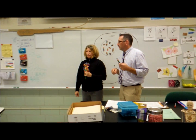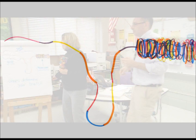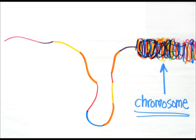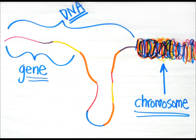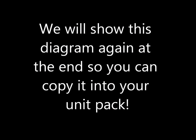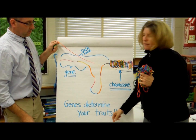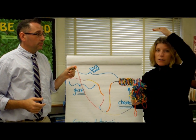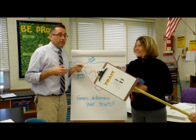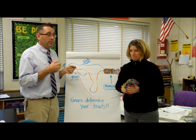Let's go over to our diagram that the students are going to draw of the model. In this diagram, here's the chromosome, and then as it's uncoiled, this part here represents the DNA. If we look at just one short segment of the DNA, we call that a gene. And the genes determine your traits, like eye color, hairy knuckles, hair color, how tall you are, or your chances of getting certain diseases, maybe like cancer — that can be determined by your genes.